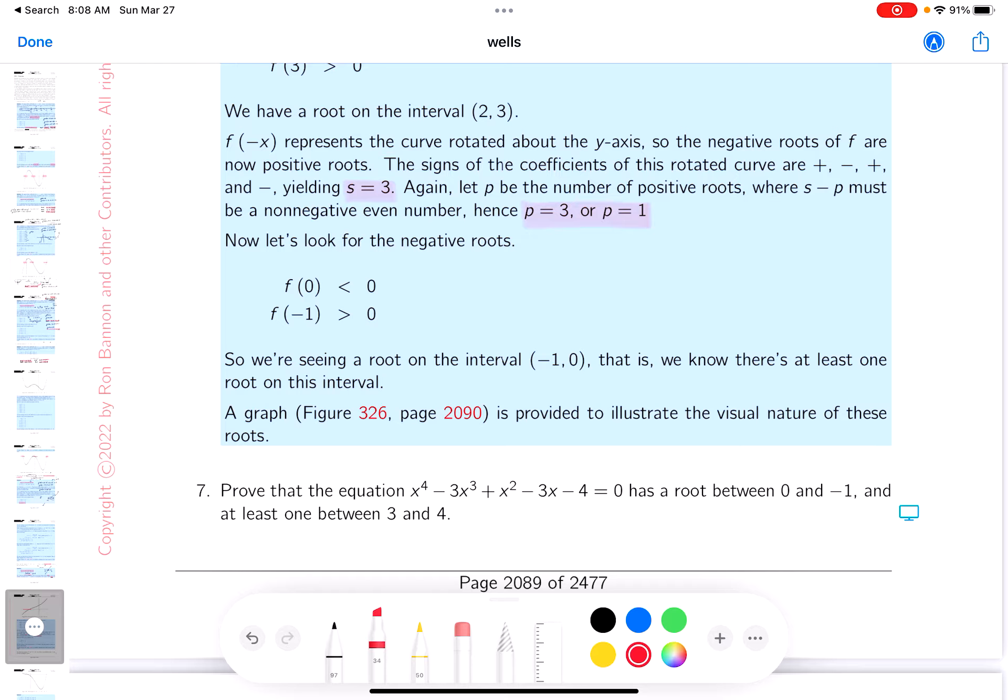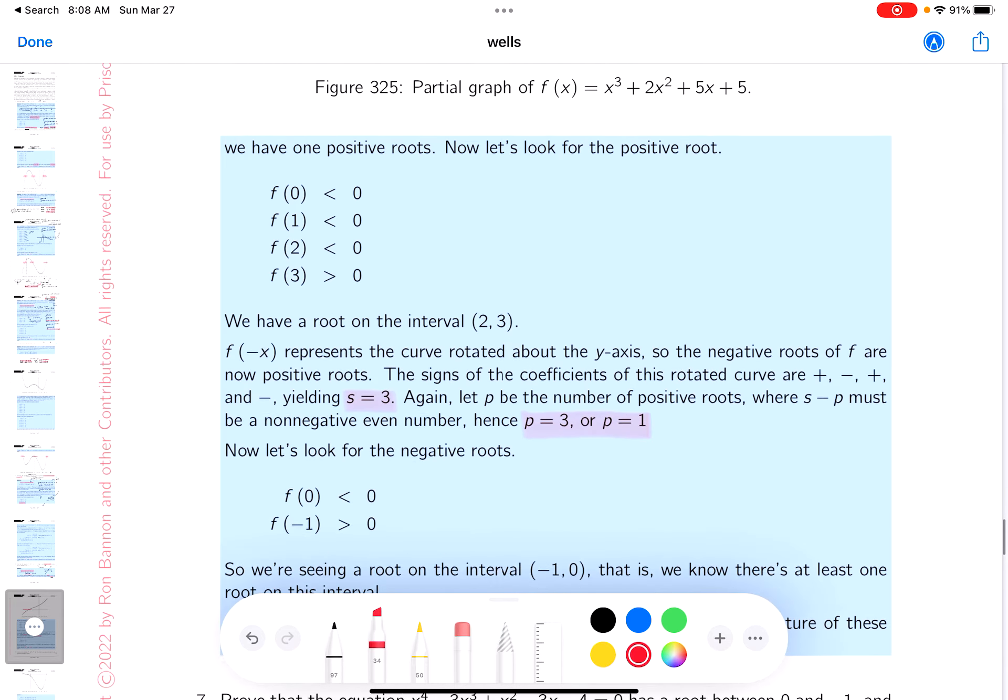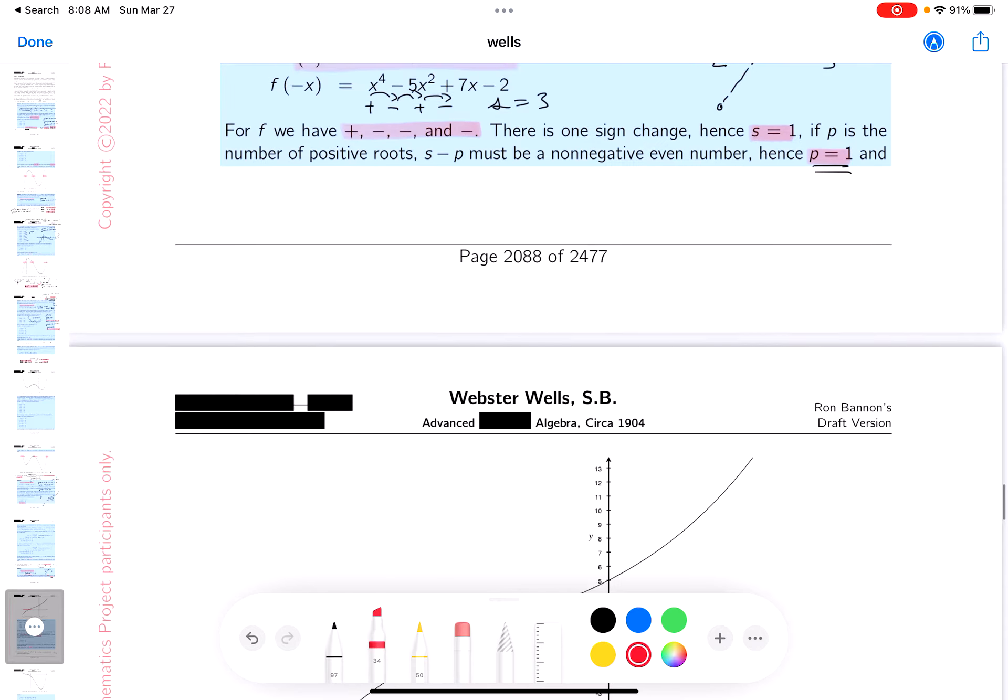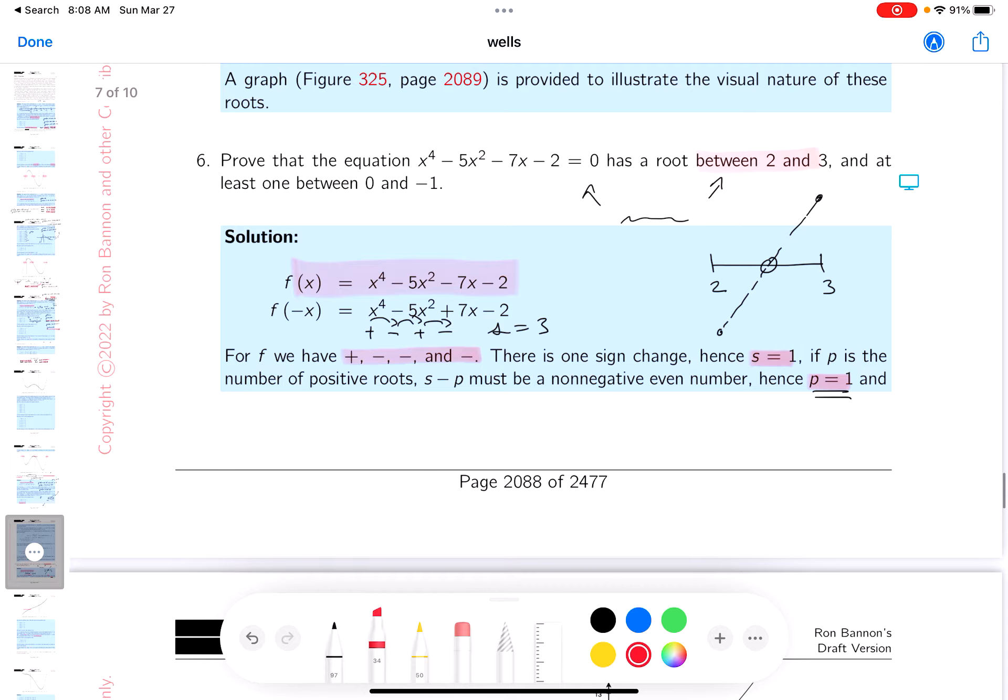And we're looking for those negative roots. Let me remind you that we have a general shape of the curve, up and up. And we're staying below 0 now. We've already showed there's only one root to the right of 0, it's between 2 and 3.